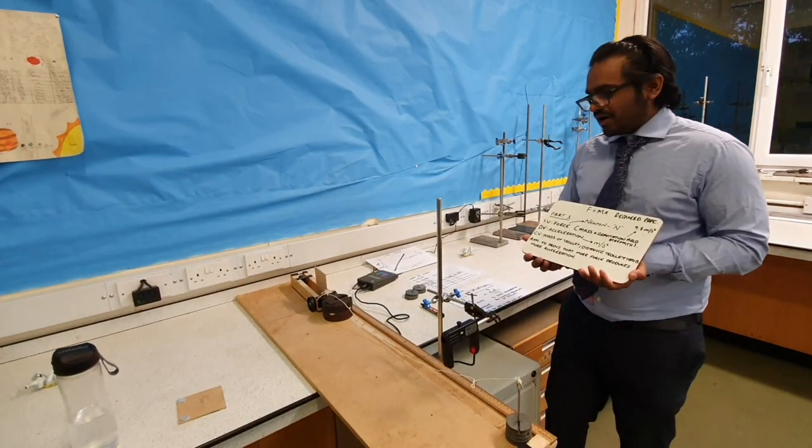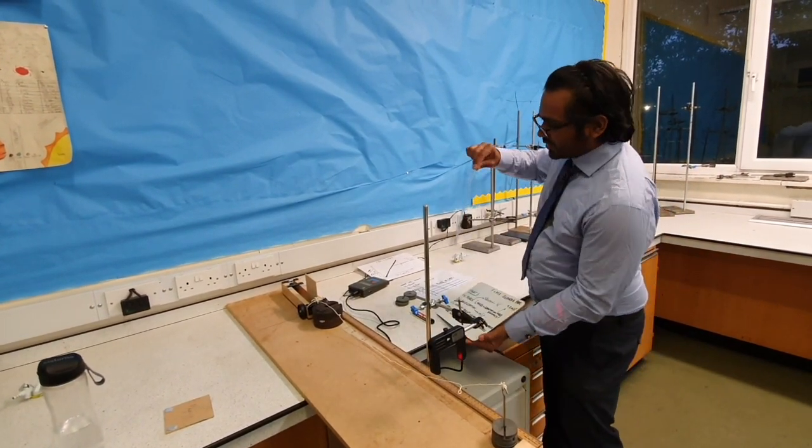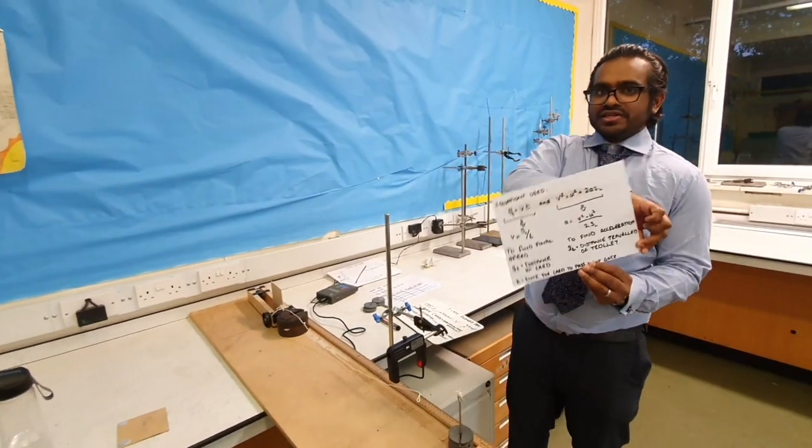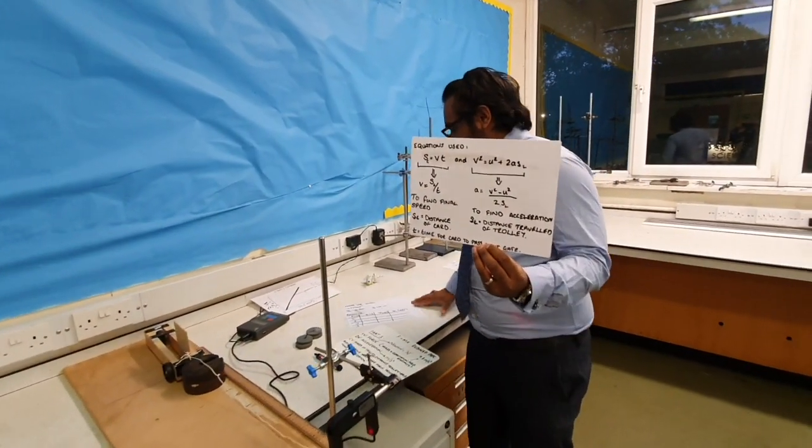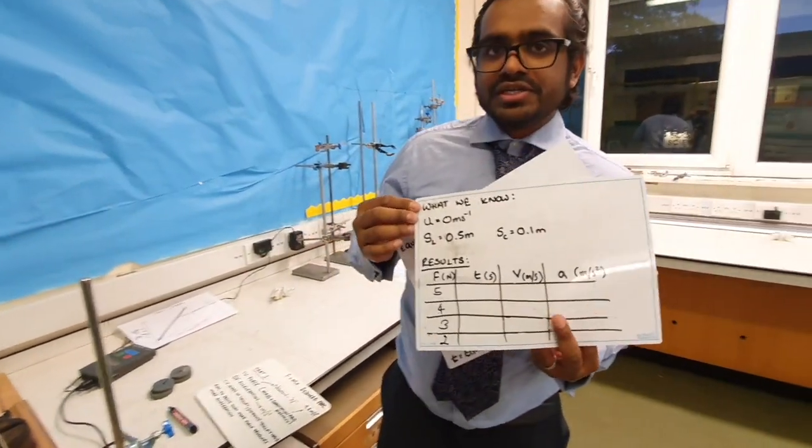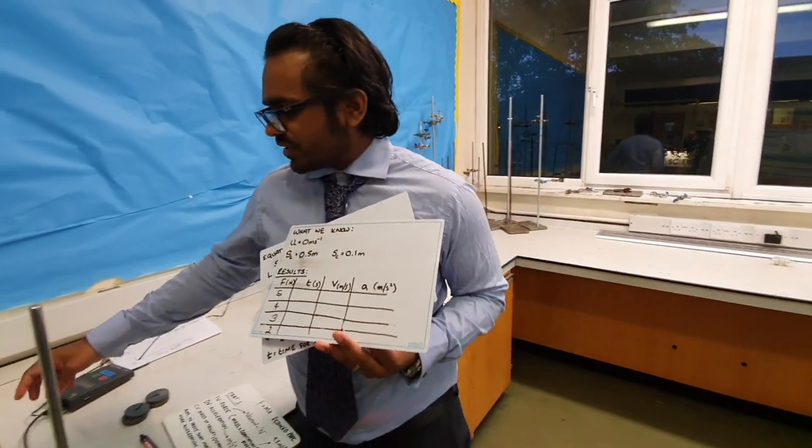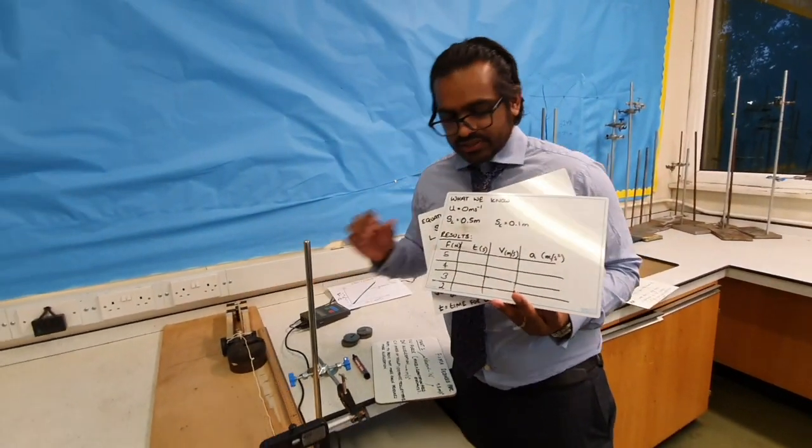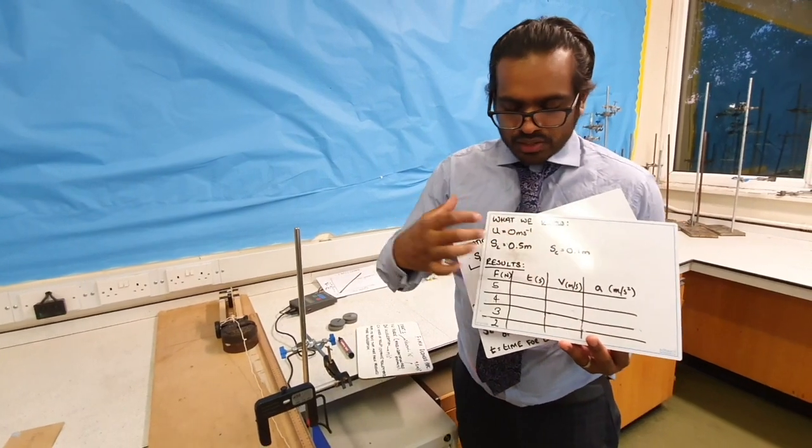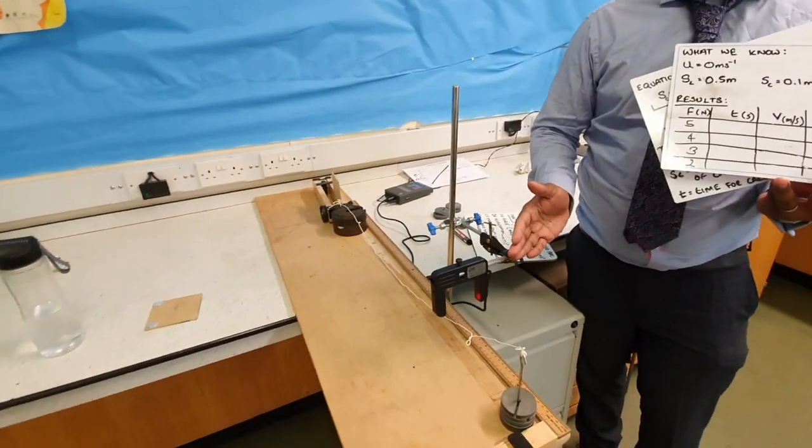We know our other variables to help use these following equations. We know that u, our initial velocity, is 0 meters per second. Our distance of the card is 0.1 and our distance of the trolley from start to finish is 0.5 meters.